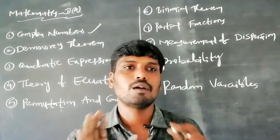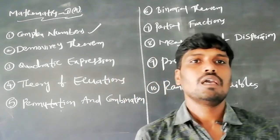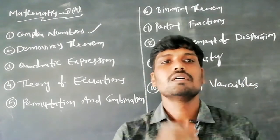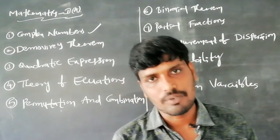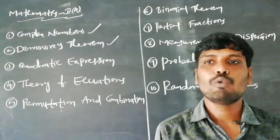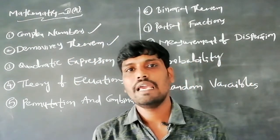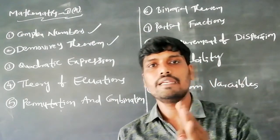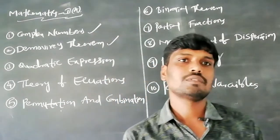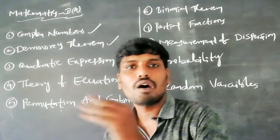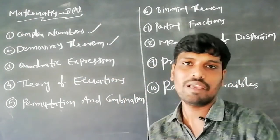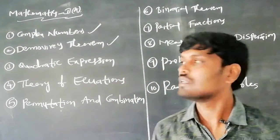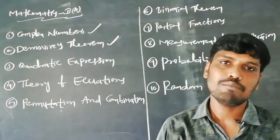Watch those videos to get total information. The second topic is De Moivre's theorem — specifically the statement: (cos θ + i sin θ)^n = cos nθ + i sin nθ. Also covered are cube roots of unity: 1, ω, ω², where their sum equals zero and their product equals one. These types of problems come in the MSET exam.